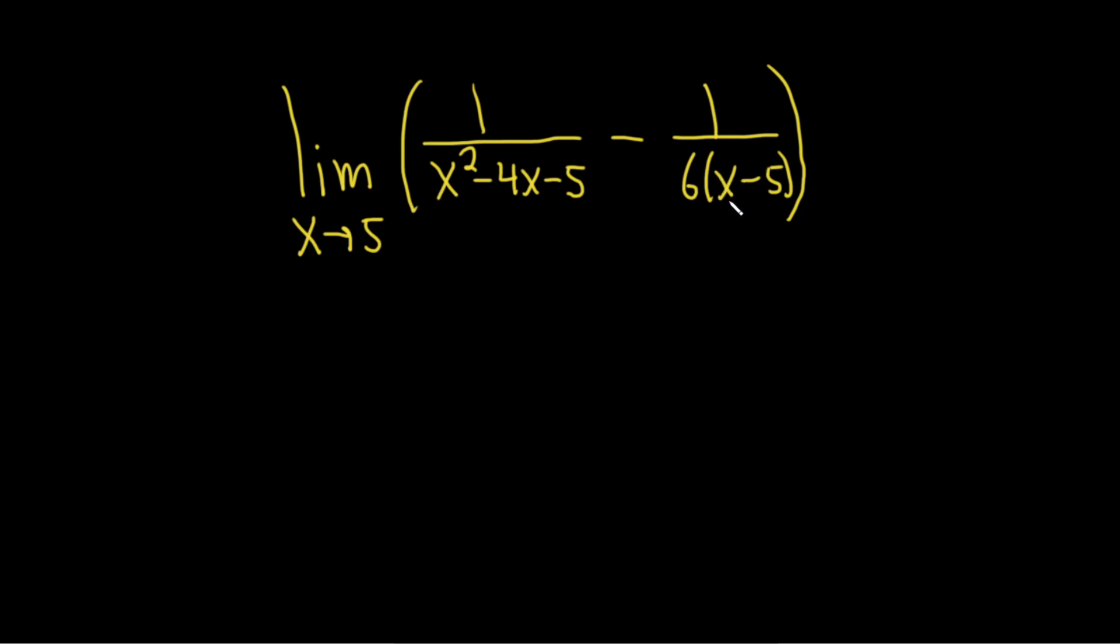And you see right away, if you do that here, you end up with 5 minus 5, which is 0. So you get 6 times 0, so you end up with 0 on the bottom and you cannot have 0 on the bottom of a fraction. So that is not going to work in this problem.